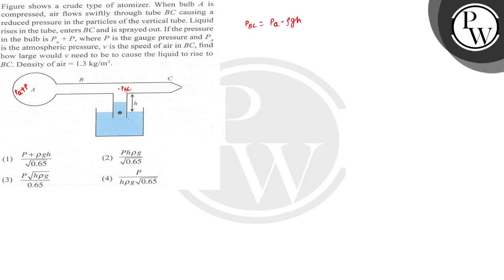Because it has to come up to height H, so we'll write it as P atmospheric minus rho GH. Now we apply Bernoulli's equation between point A and this point.